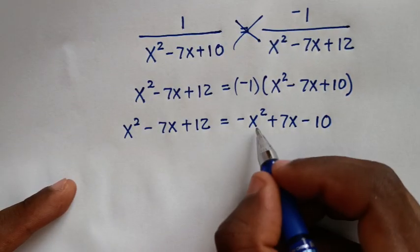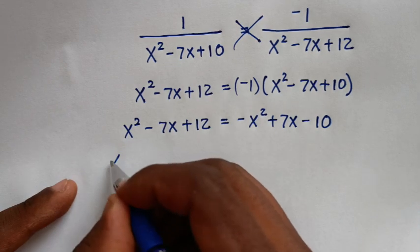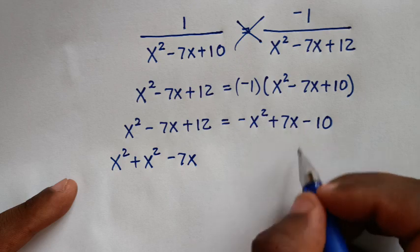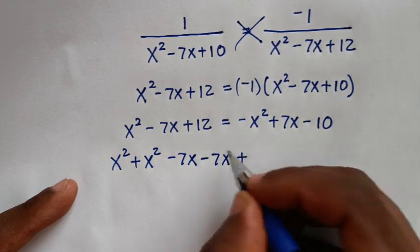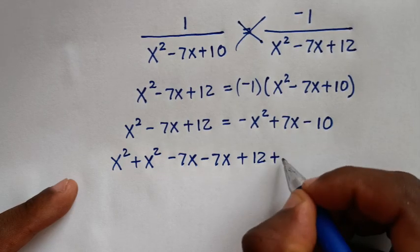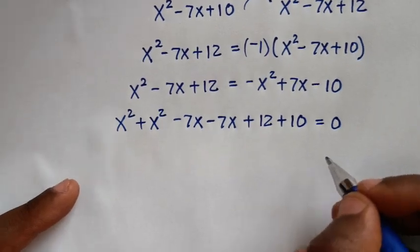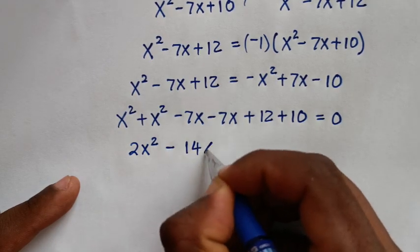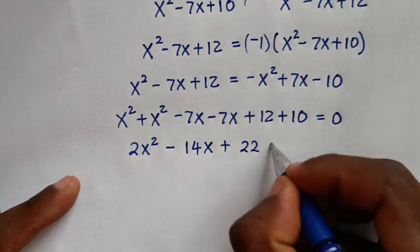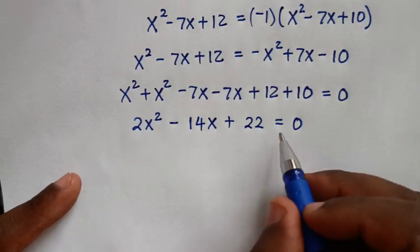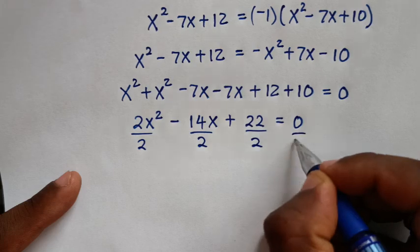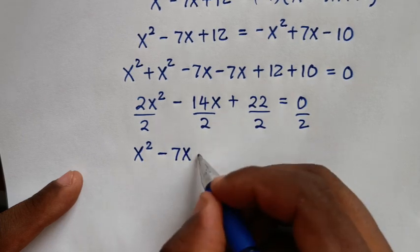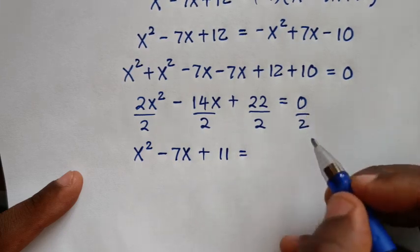Collecting all terms to the left side: x squared plus x squared is 2x squared, minus 7x minus 7x is minus 14x, and plus 12 plus 10 is 22, giving 2x squared minus 14x plus 22 equals 0. Dividing through by 2 gives x squared minus 7x plus 11 equals 0.